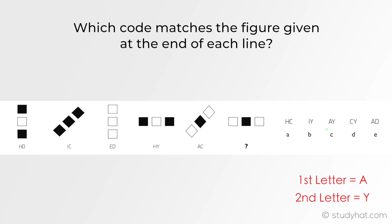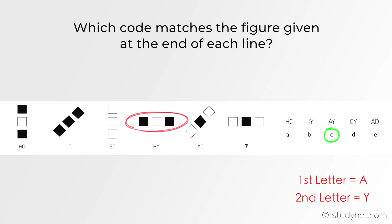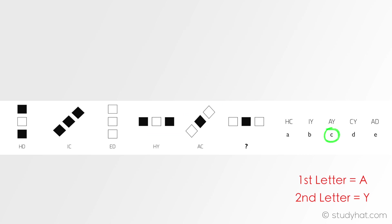Therefore the answer is AY, which is C. We can double-check: A represents white, black, white, and that is the same colour scheme right here. Also, Y represents a horizontal direction, and this figure here is facing horizontally.